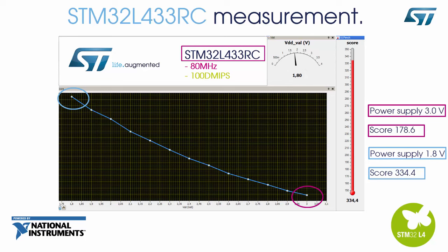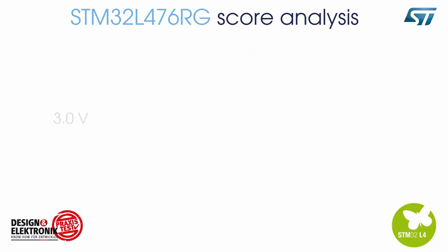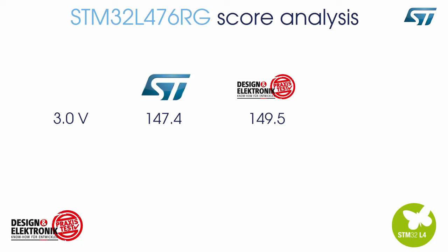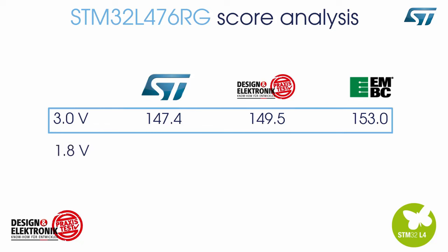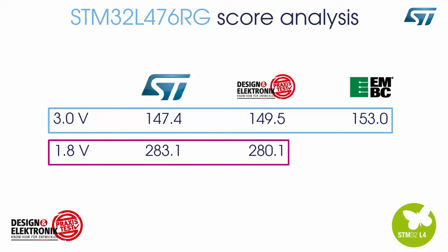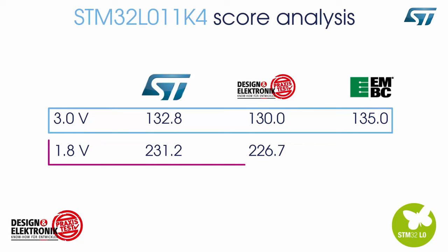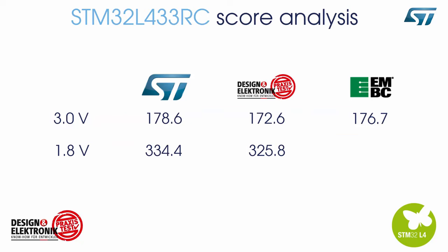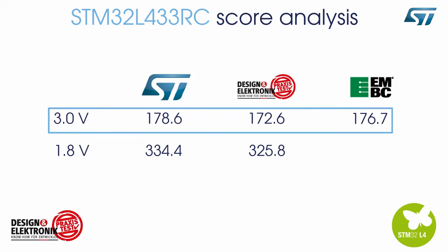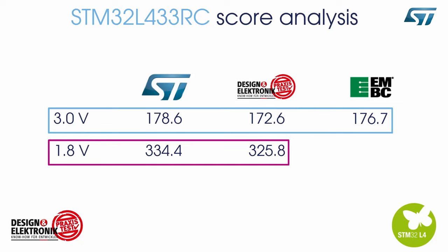STM32L433 results are impressive with a score above most competitors. For a 3-volt core power supply, the STMicroelectronics power measurement bench obtains 147.4, Design & Electronic Magazine obtains 149.5, and EEMBC obtains 153.0 — scores considered equivalent. Comparing results at 1.8 volts, ST and Design & Electronic measurements are already close and the score increases considerably. STM32L011 shows strong results especially at 1.8 volts, while STM32L433 achieves close to 179 at 3 volts and an impressive 334.4 points at 1.8 volts — likely the best market score at 1.8-volt core power supply.